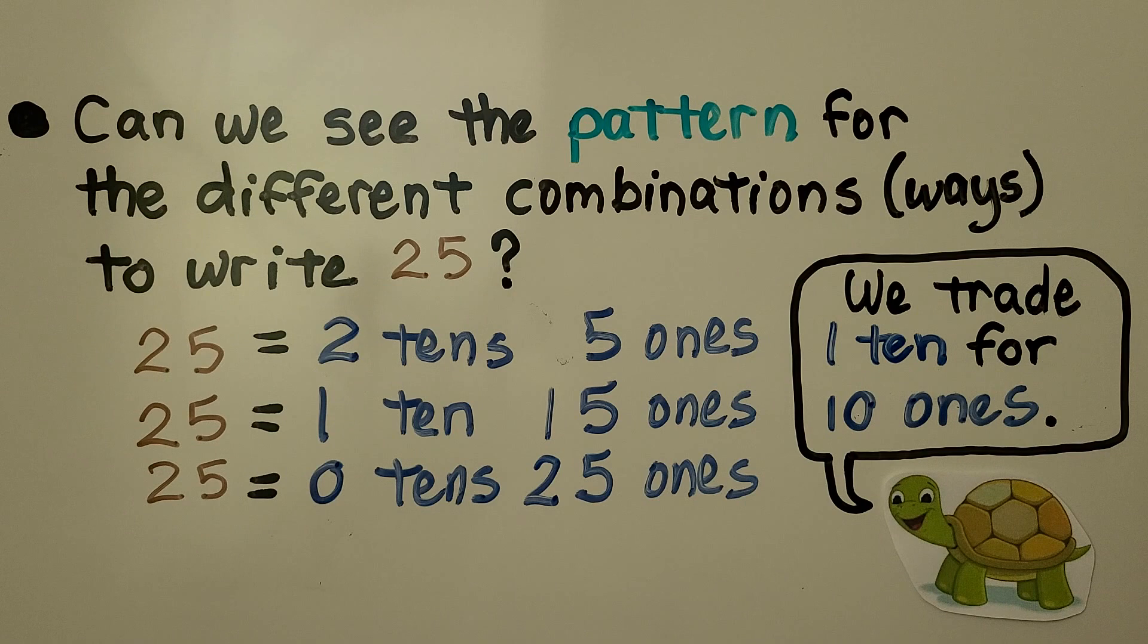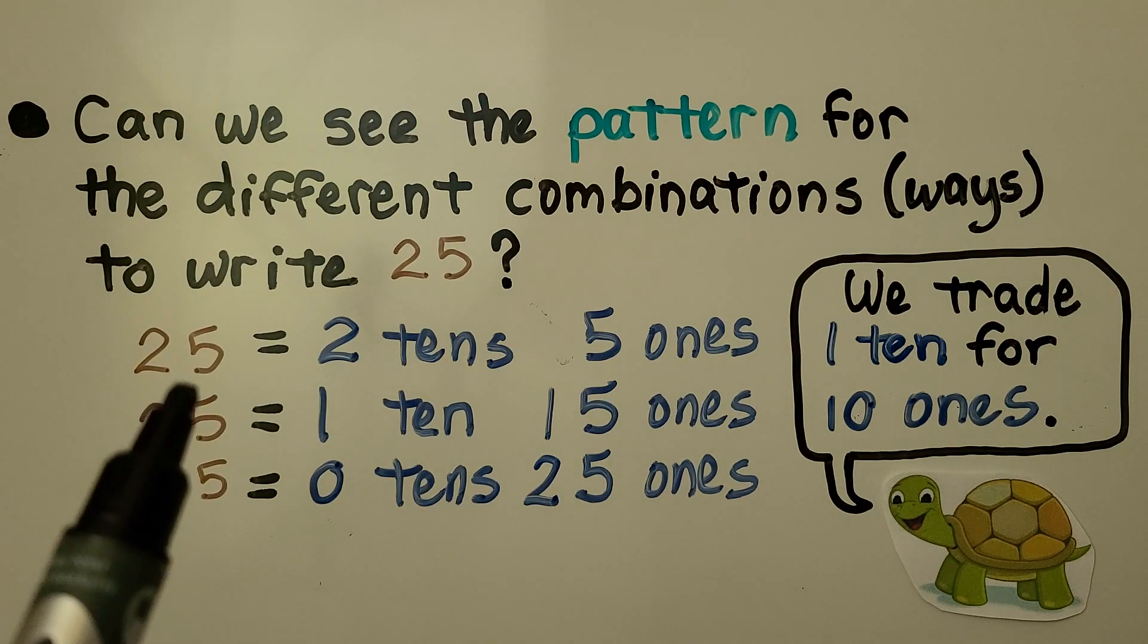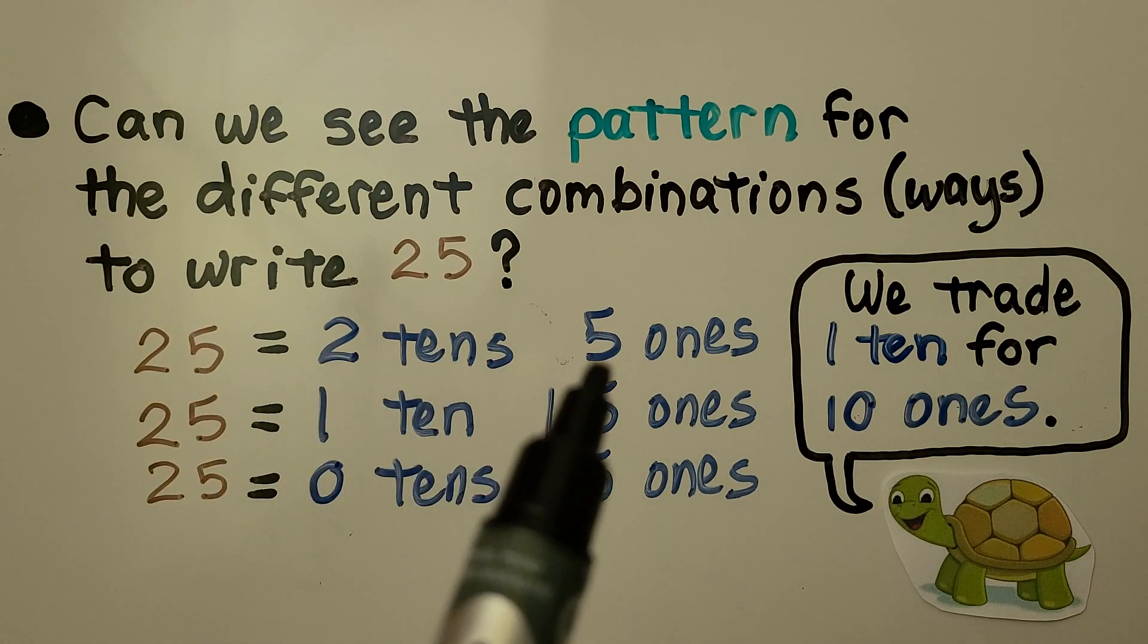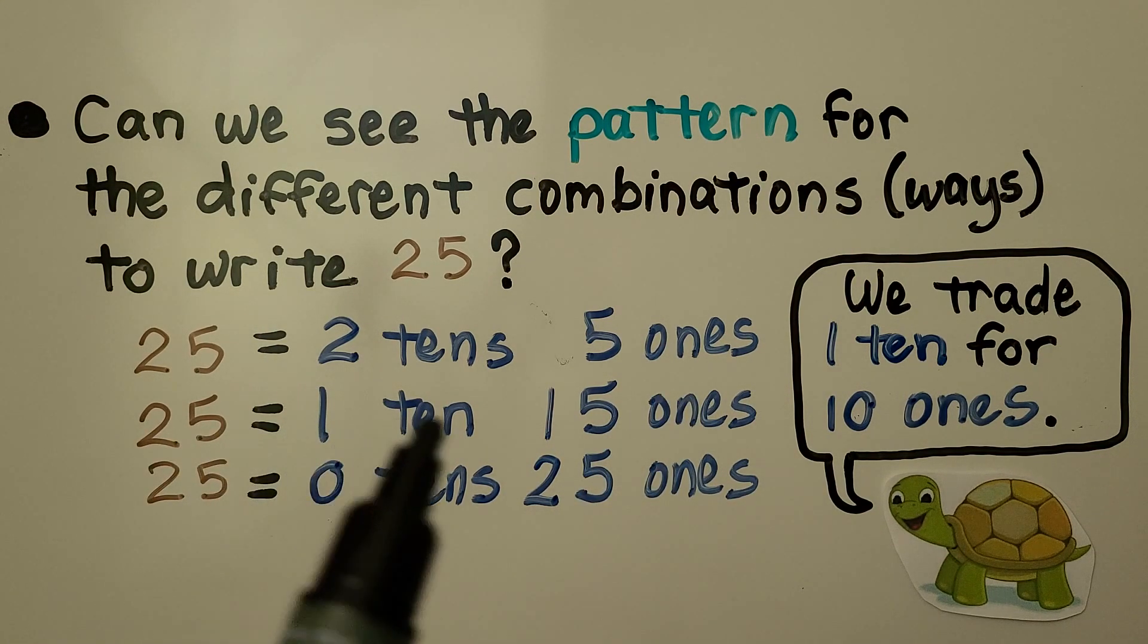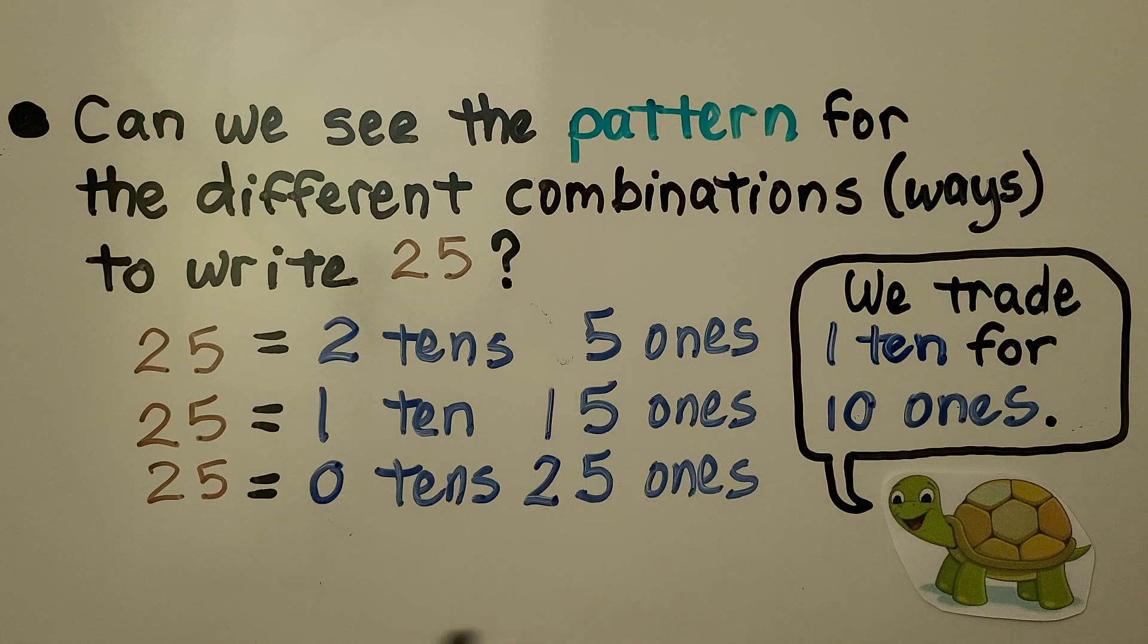Can we see the pattern for the different combinations, the different ways to write 25? We have 25 is equal to 2 tens, 5 ones. Now it says 25 is equal to 1 ten and 15 ones. And here it says 25 is equal to 0 tens, 25 ones. We trade 1 ten for 10 ones.